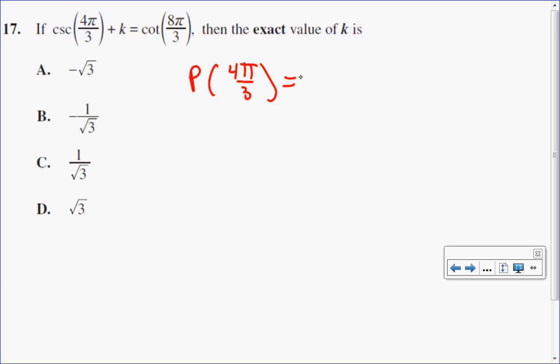The point 4π over 3 is a point in quadrant 3 with a reference angle of π over 3. In quadrant 3, my x value and y value are negative, and I know the coordinates would be negative 1 half and negative root 3 over 2.